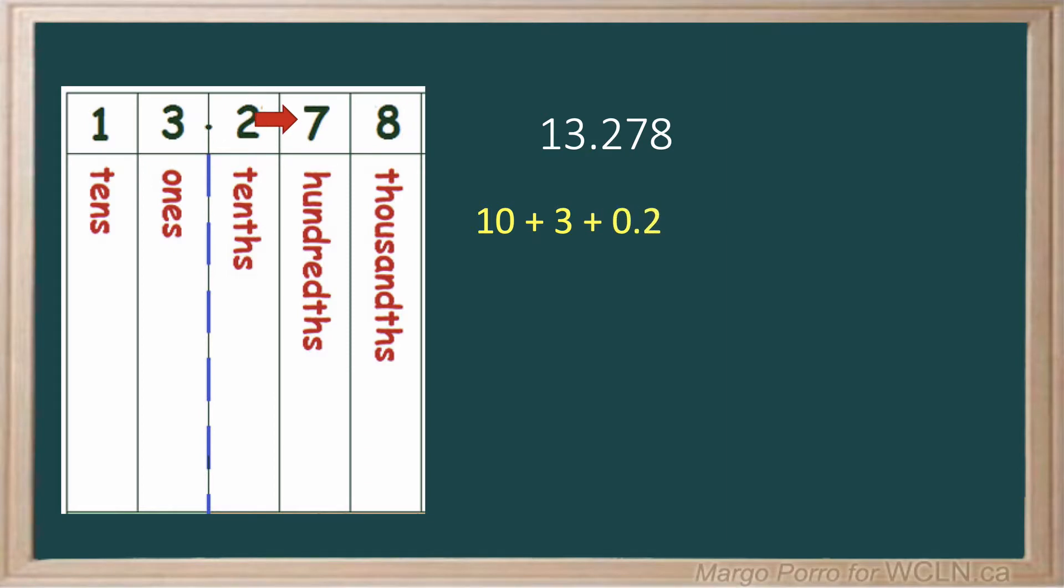The next digit is 7 hundredths. Notice that there is a 0 before the decimal and a placeholder of 0 in the tenths place, so the 7 is two places over from the decimal.